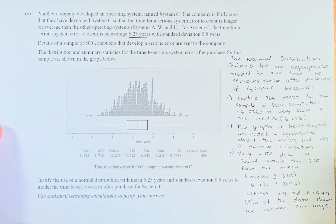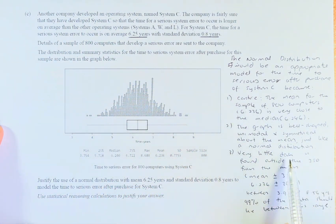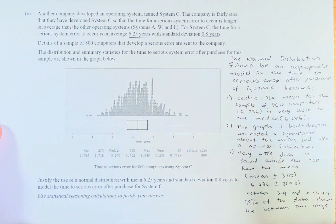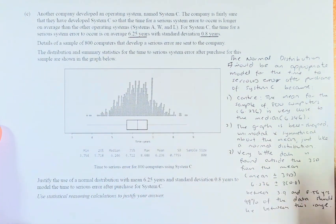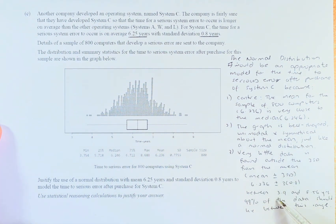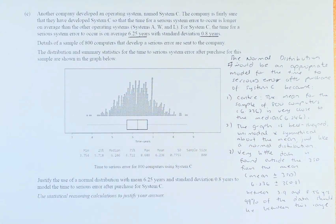The third point is that very little data is found outside 3 standard deviations about the mean. If you know your statistics: 1SD is 68%, 2SD is 95%, and 3SD is 99%. In this case, 99% of the data lies within 3 standard deviations. We calculated: mean plus 3 standard deviations is 6.236 plus 3 times 0.8 — because the standard deviation is 0.8 — so all the data, 99% of the data, lies within 3.9 and 8.56 years. Only 1% of the data lies outside the 3 standard deviations.